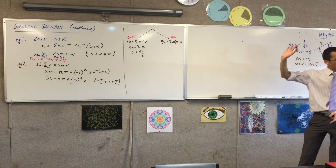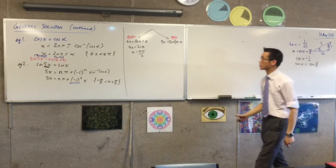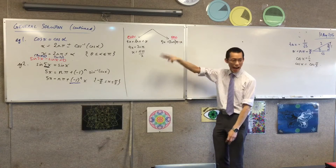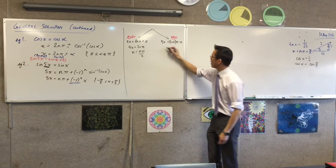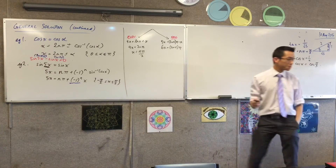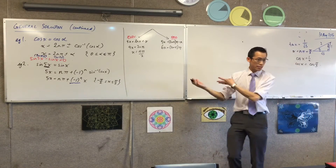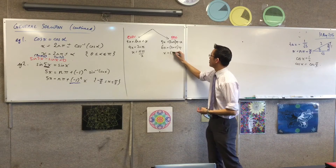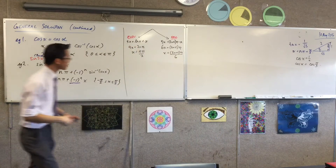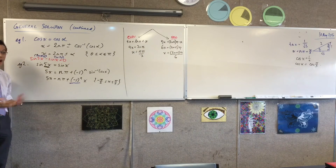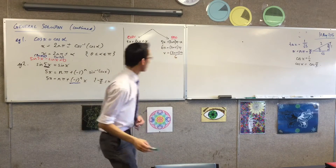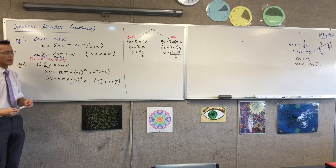I'm going to put that to one side and now think about this other side of the equation. Because I've got a minus x on the right-hand side, I'm going to add x to both sides, which leaves me with this. And now I just divide through to make x the subject.